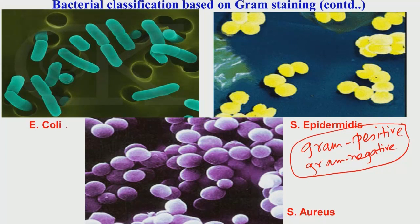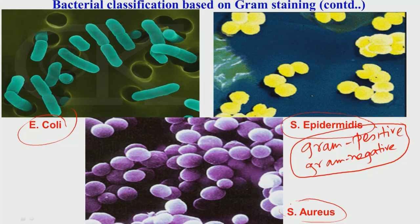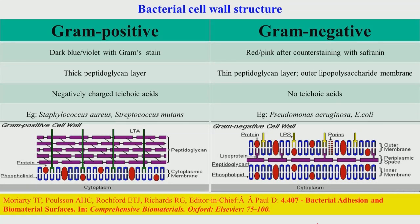Examples of gram-negative bacteria include E. coli, while gram-positive bacteria include Staphylococcus aureus and epidermidis. They stain differently — gram-positive bacteria appear dark blue or violet with the gram staining agent, while gram-negative bacteria like E. coli appear red or pink after counter-staining with safranine. Shape-wise, E. coli is also very different from Staphylococcus species.